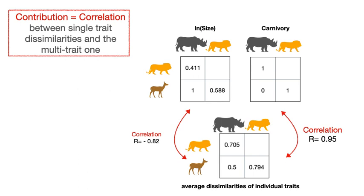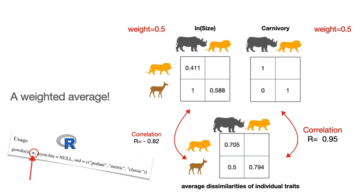Here we can see the dissimilarity between all species pairs. Above, we see the values computed for each individual trait, then below their average, which is the multi-trait dissimilarity. We can also estimate the contribution of individual traits to the multi-trait dissimilarity, given by the correlation between single-trait dissimilarities and the multi-trait one. In this case, we can see that such correlation is stronger for the categorical trait, and for the quantitative trait it is even negative. As such, the multi-trait differences reflect more the effect of whether species are carnivorous or not, and the lion — the only carnivorous species — appears to be the most unique species, despite the great size differences between the rhino and the gazelle.